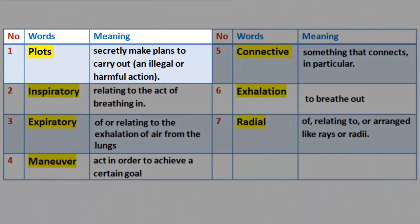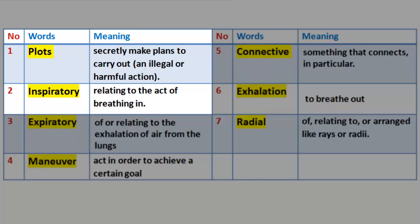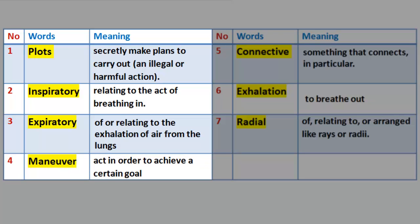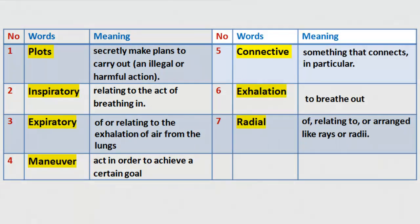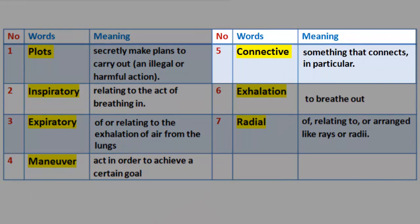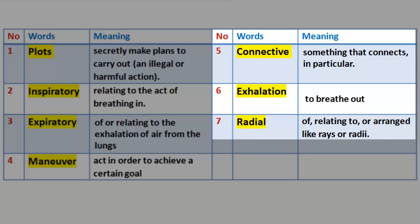Vocabulary 1. 1. Plots: secretly make plans to carry out an illegal or harmful action. 2. Inspiratory: relating to the act of breathing in. 3. Expiratory: of or relating to the exhalation of air from the lungs. 4. Maneuver: act in order to achieve a certain goal. 5. Connective: something that connects, in particular. 6. Exhalation: to breathe out. 7. Radial: of, relating to, or arranged like rays or radii.